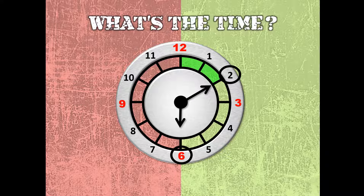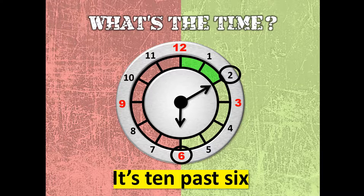How about this one? What's the time? Look at the clock. The short hand is on number 6 and the long hand is on number 2. So you read this one as: it's ten past six. Ten past six.